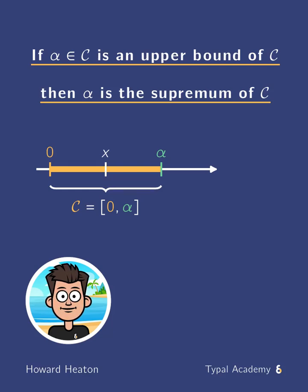Suppose you are given a set C on the real number line. Let's prove that if you give me a number alpha that is in C, that is also an upper bound for C, then alpha is actually the supremum of C.